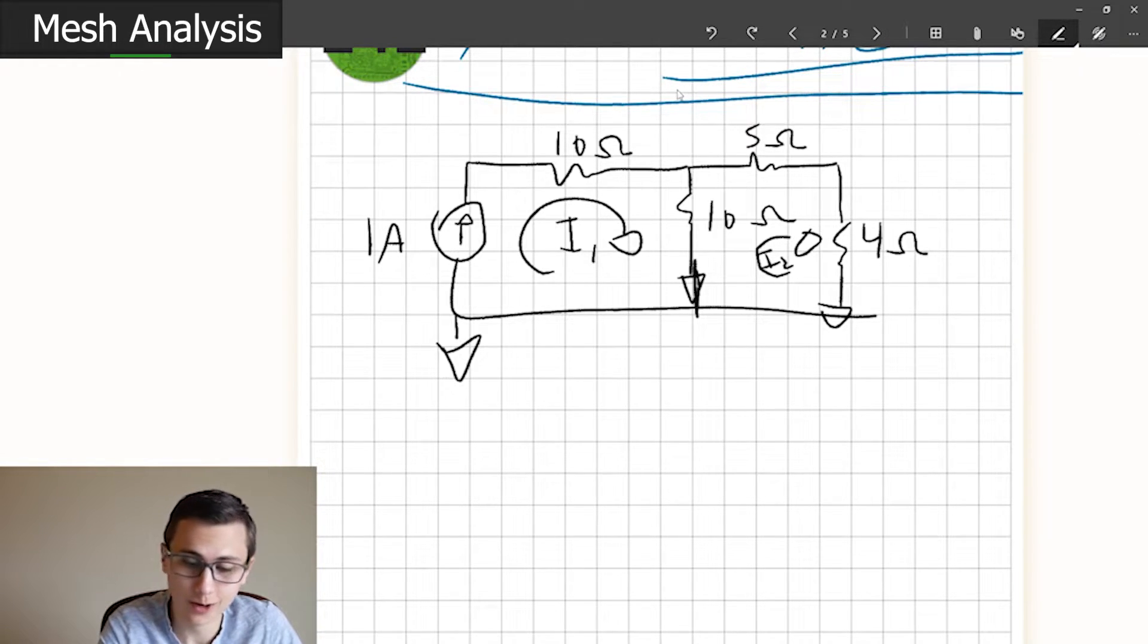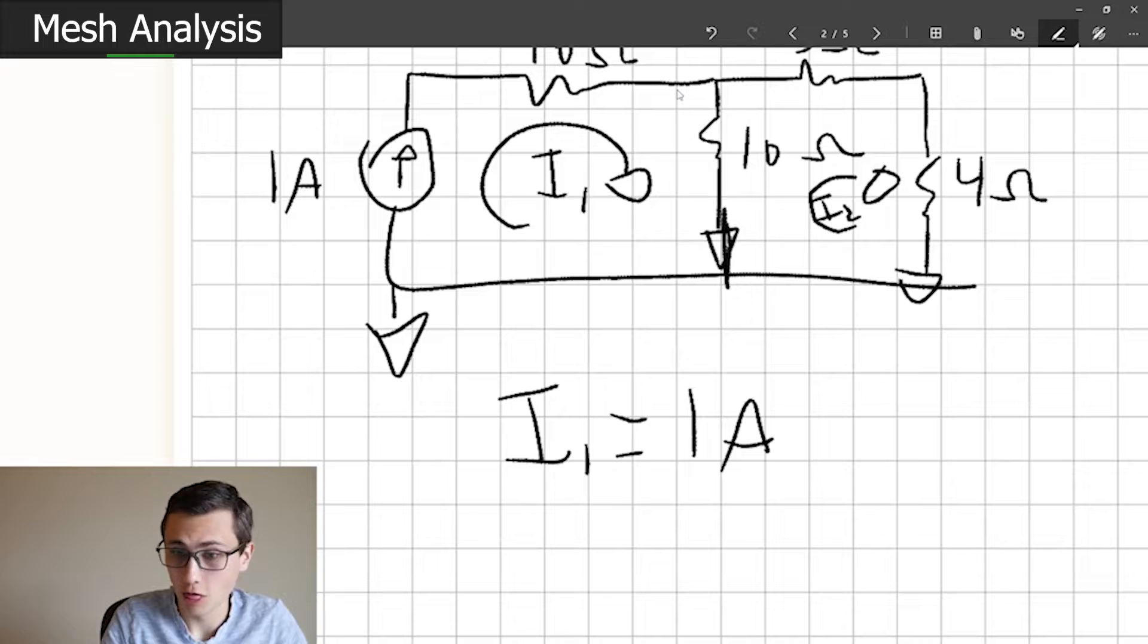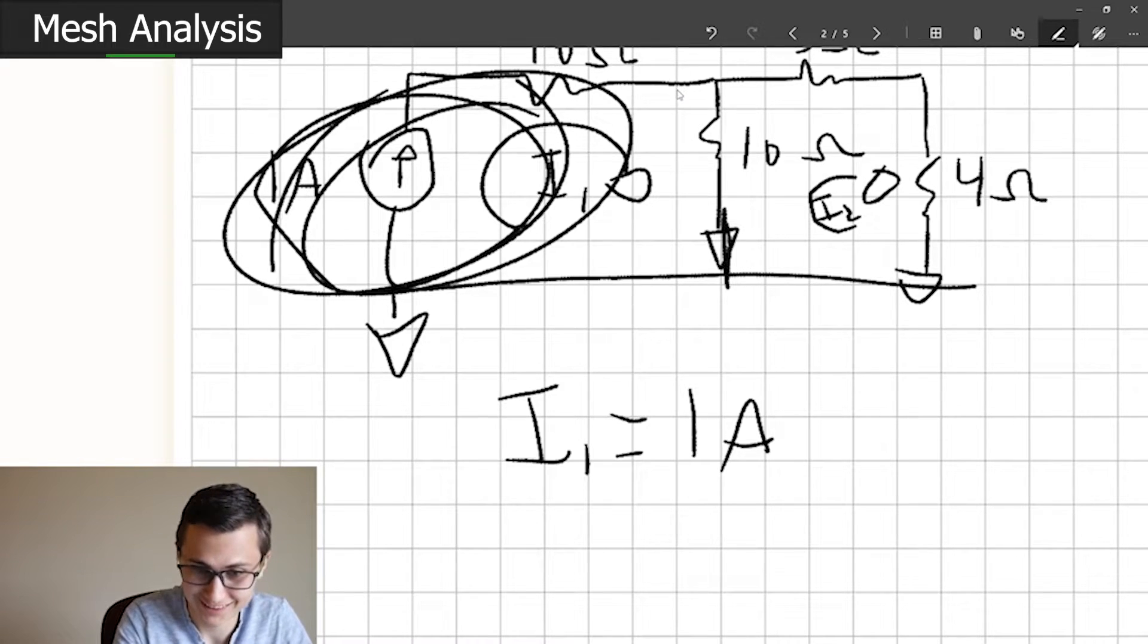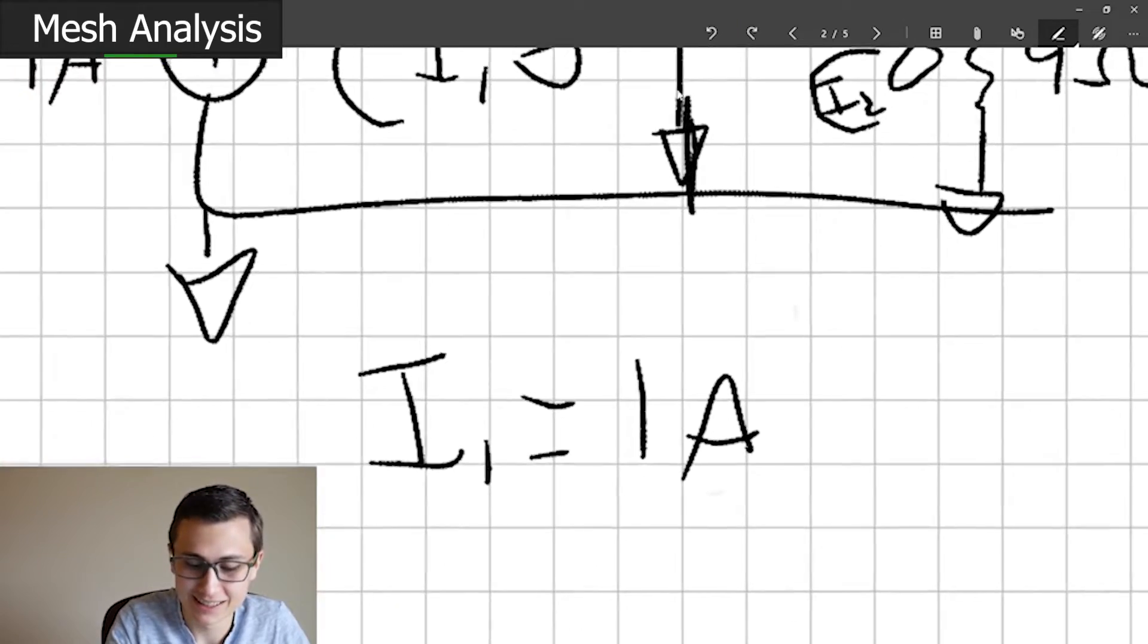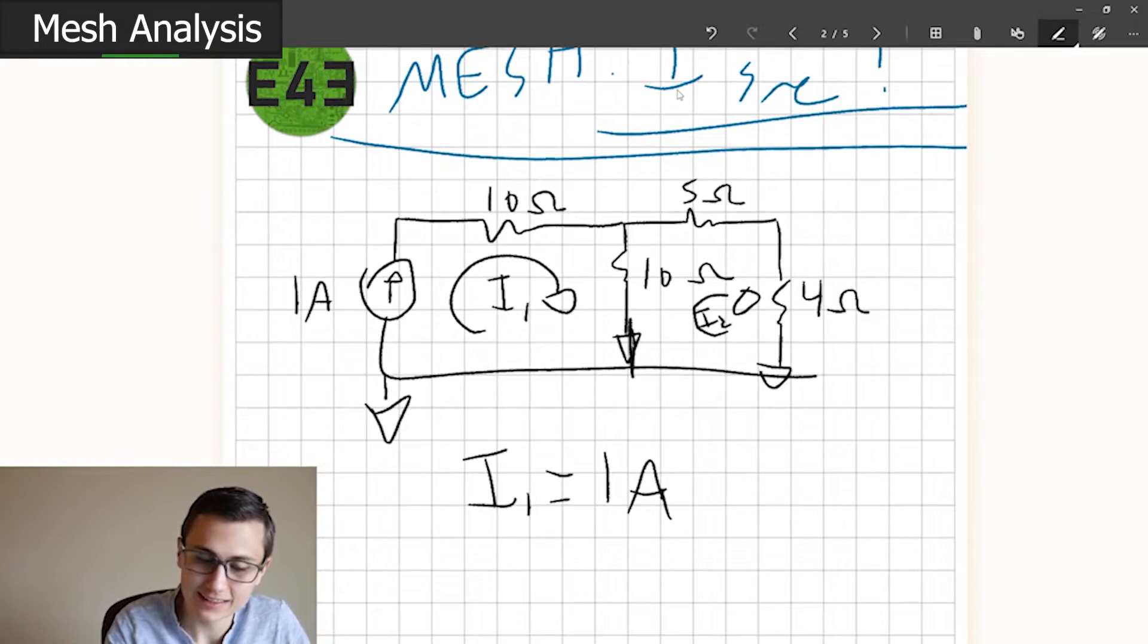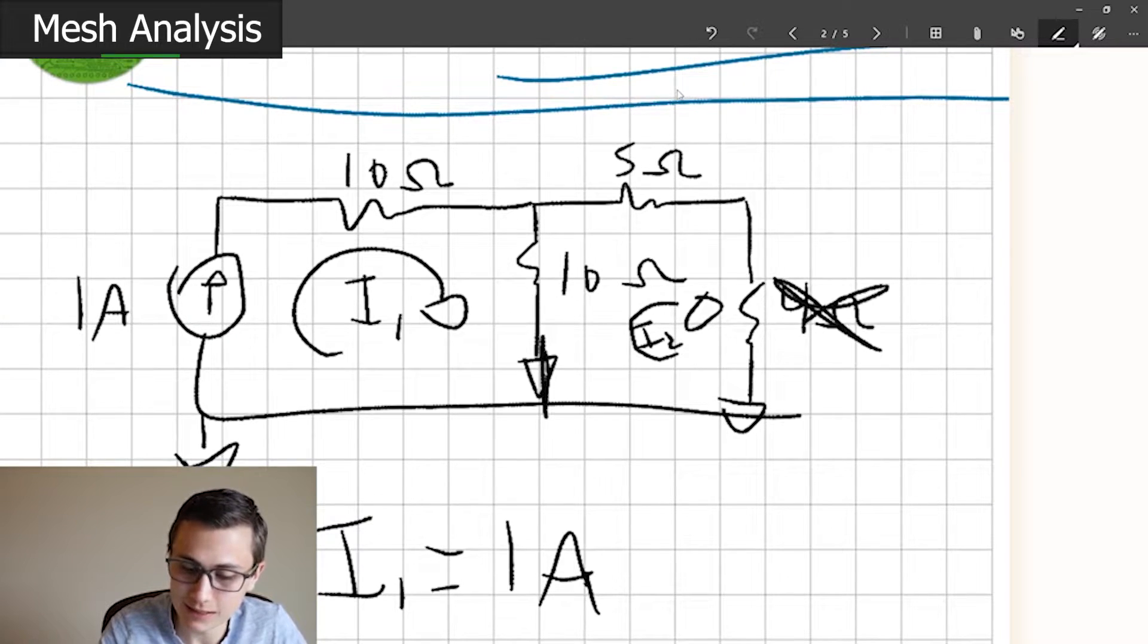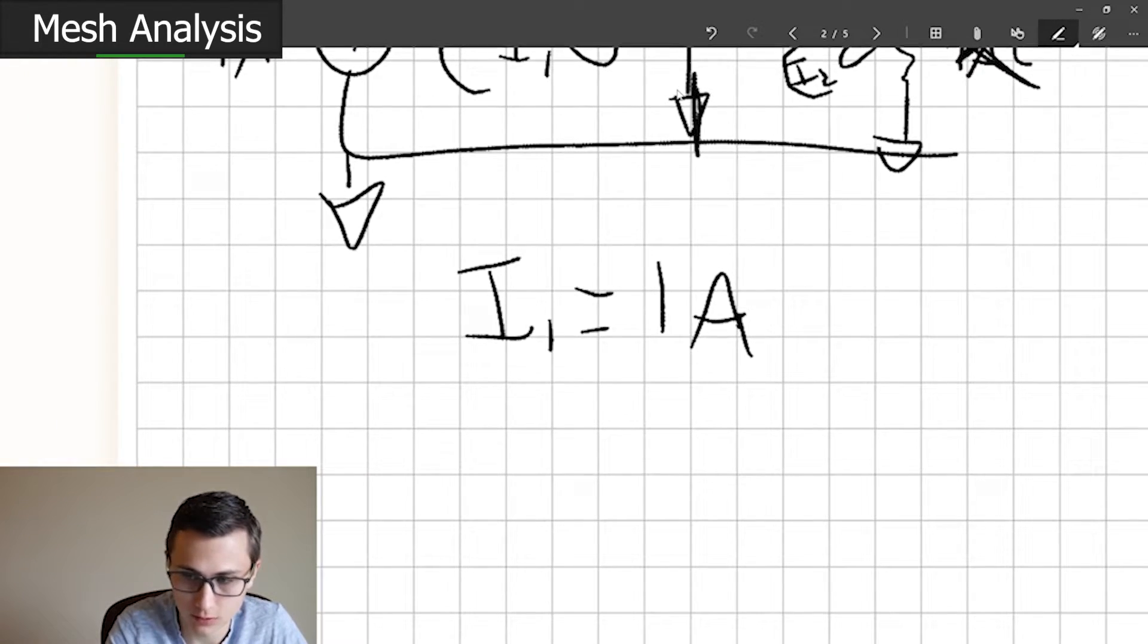I'm going to finish drawing this because the grounds imply that it's all connected. So we have current loop the first. We have current loop the second. So this is one of my favorite times to use mesh analysis, because it's so super simple. We know that I1 equals one amp. Why? There's a current source. It's fixed. It's constant. It's so easy.